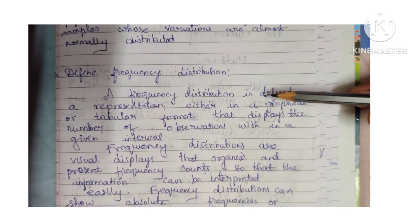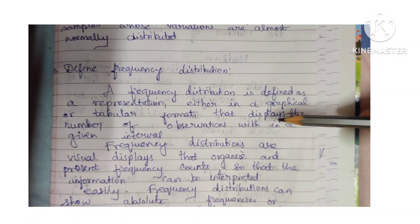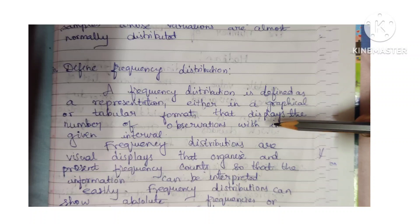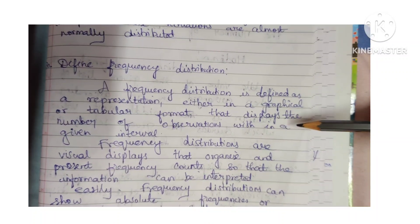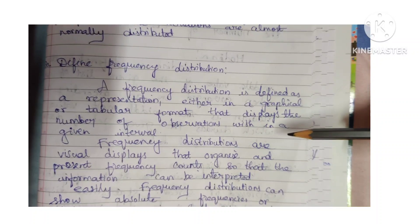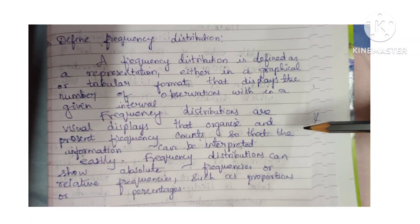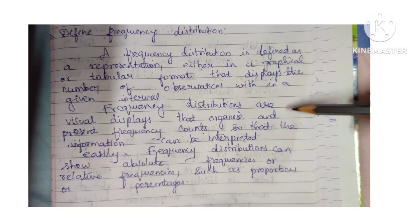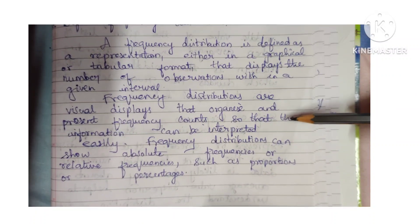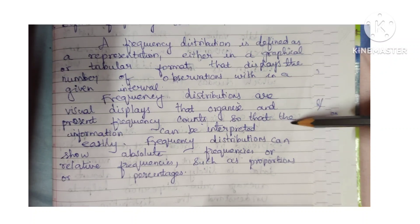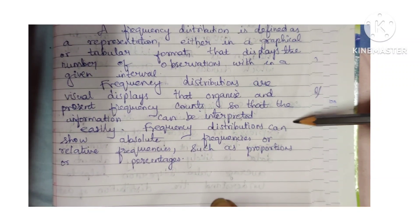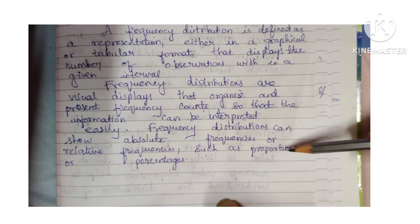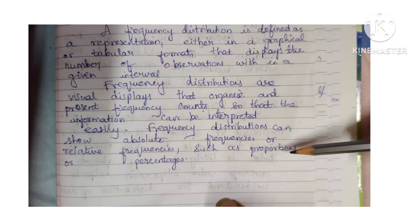Define frequency distribution. A frequency distribution is defined as a representation — either in a graphical or tabular format — that displays the number of observations within a given interval. Frequency distributions are visual displays that organize and present frequency counts so that information can be interpreted easily. Frequency distribution can show absolute frequencies or relative frequencies such as proportions or percentages.